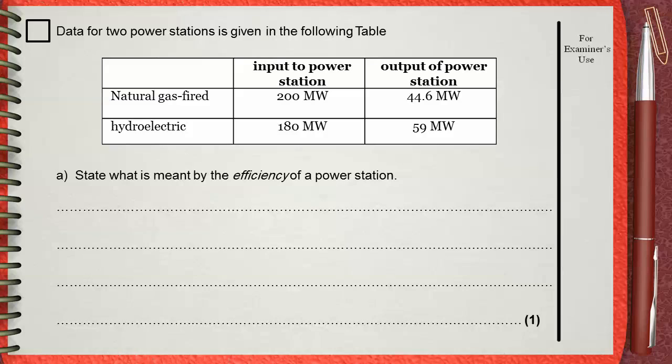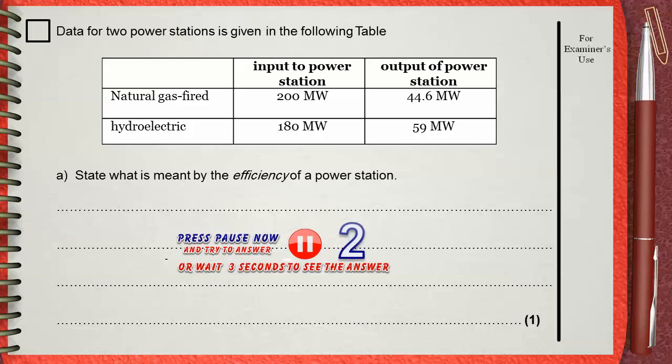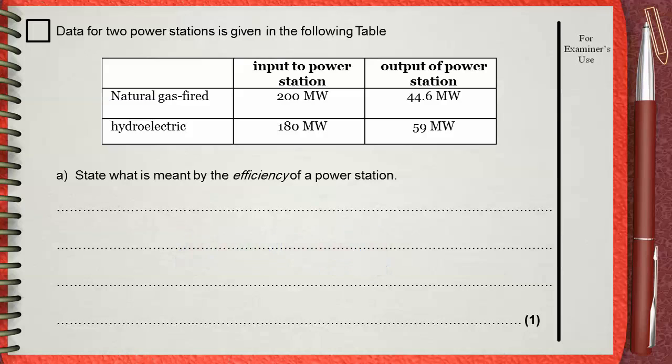Part a states: what is meant by the efficiency of a power station? Efficiency is normally the ratio between the useful output energy to the total input energy.